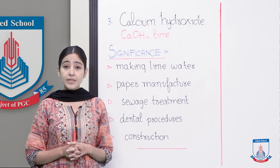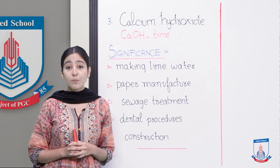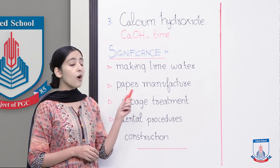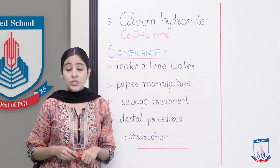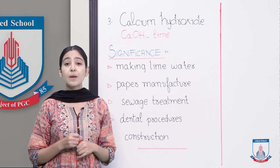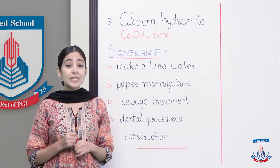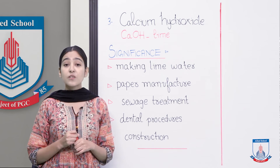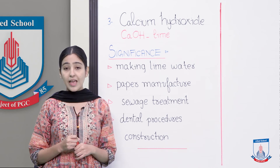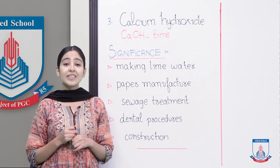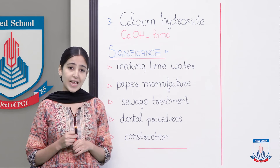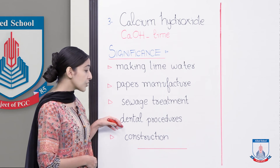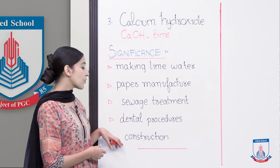In paper manufacturing, the most important ingredient is PCC — precipitated calcium carbonate — which ensures the whiteness of the paper, fine filling, and opacity levels, and it is made from Ca(OH)₂, calcium hydroxide. Calcium hydroxide is also used for sewage treatment, dental procedures such as root canal filling, and construction purposes.